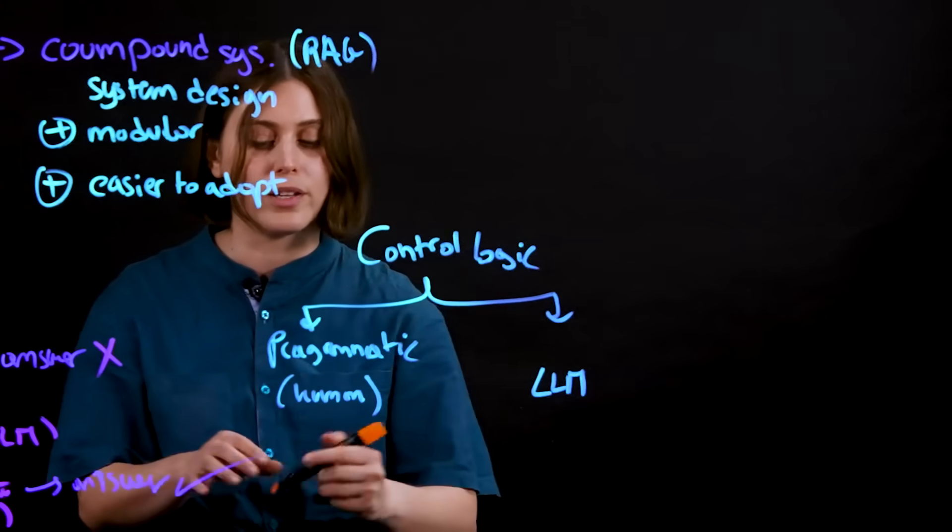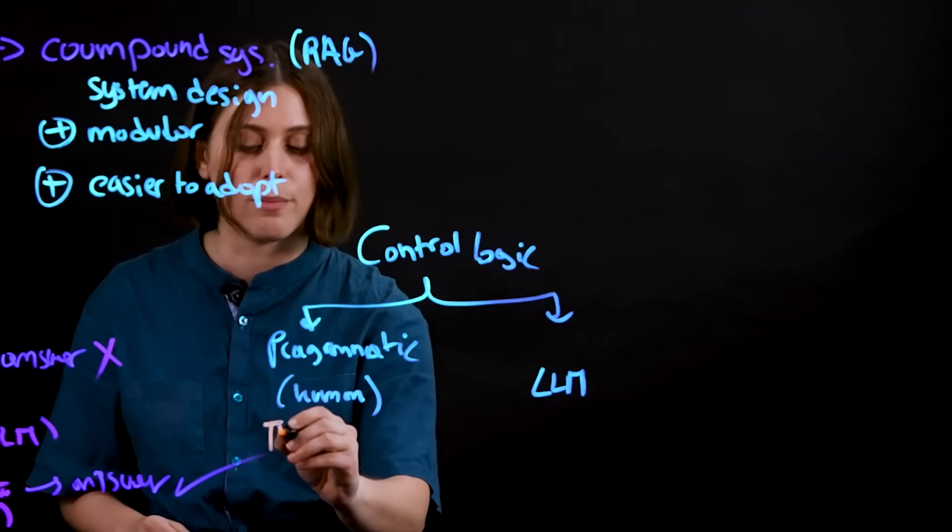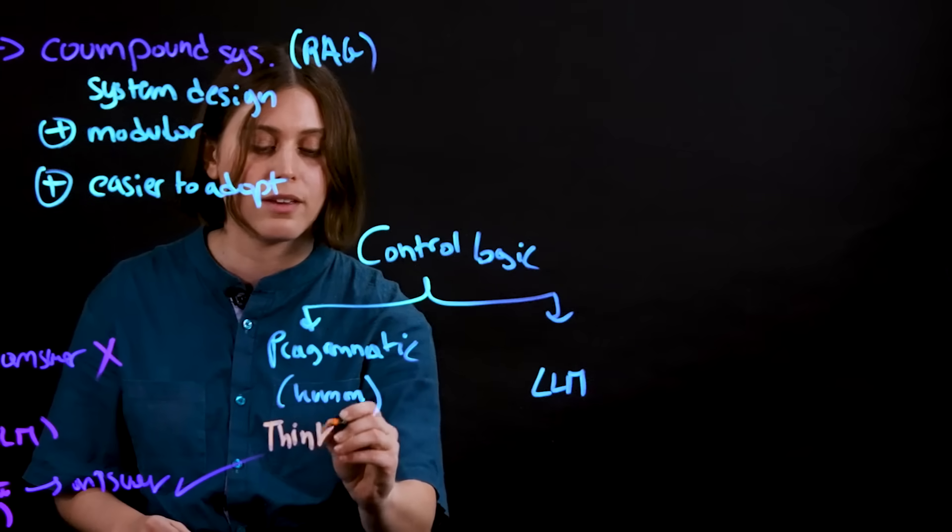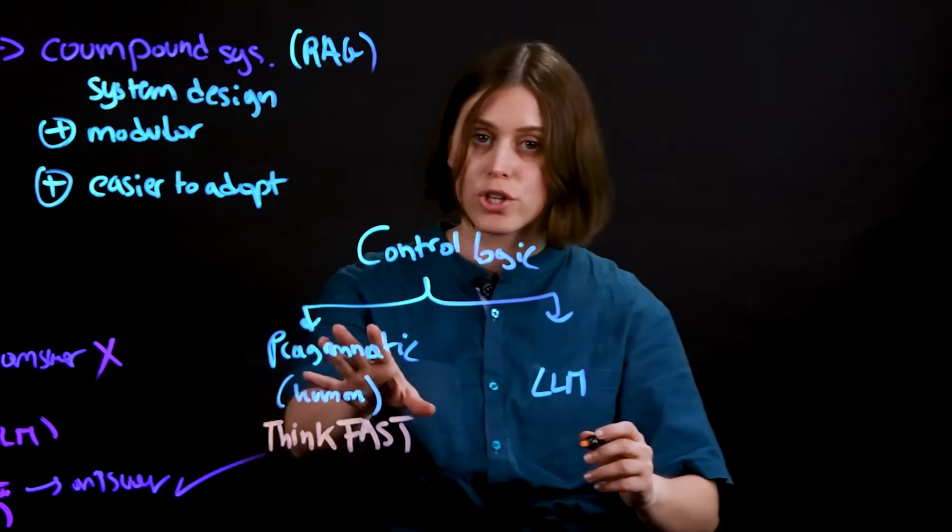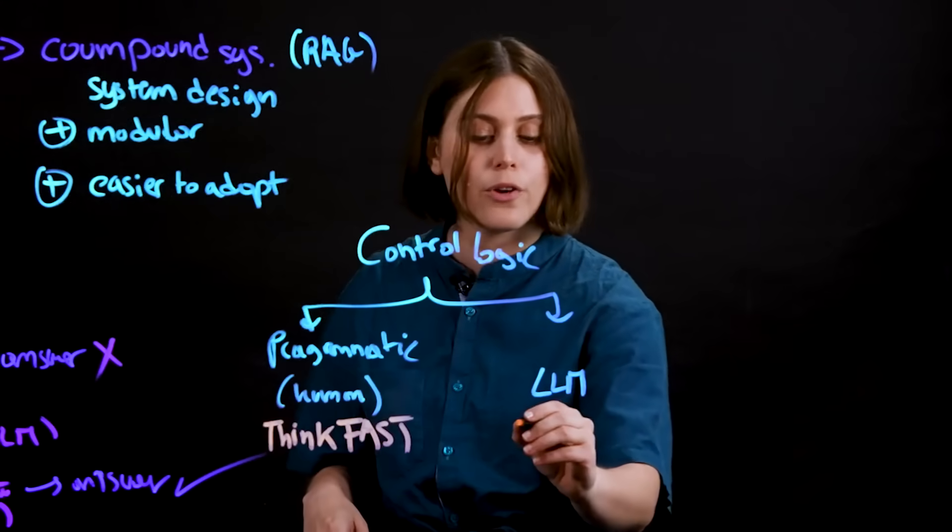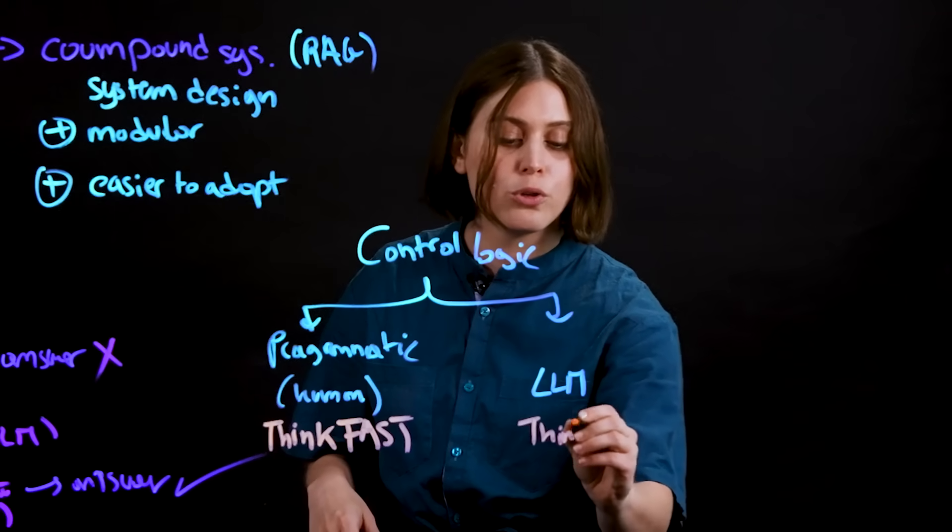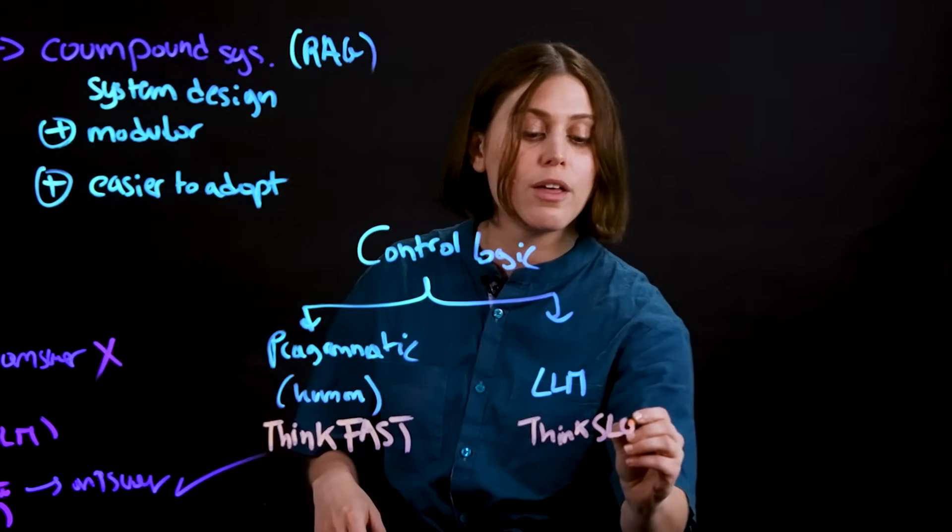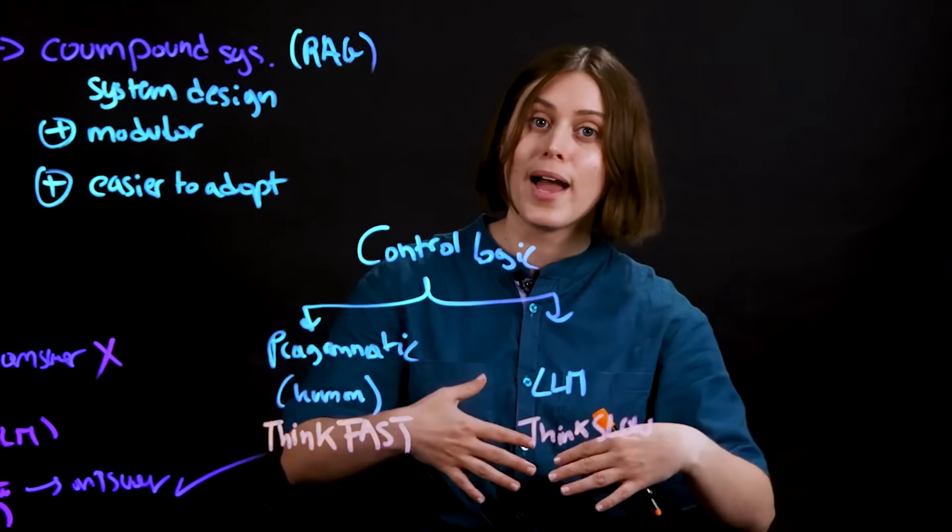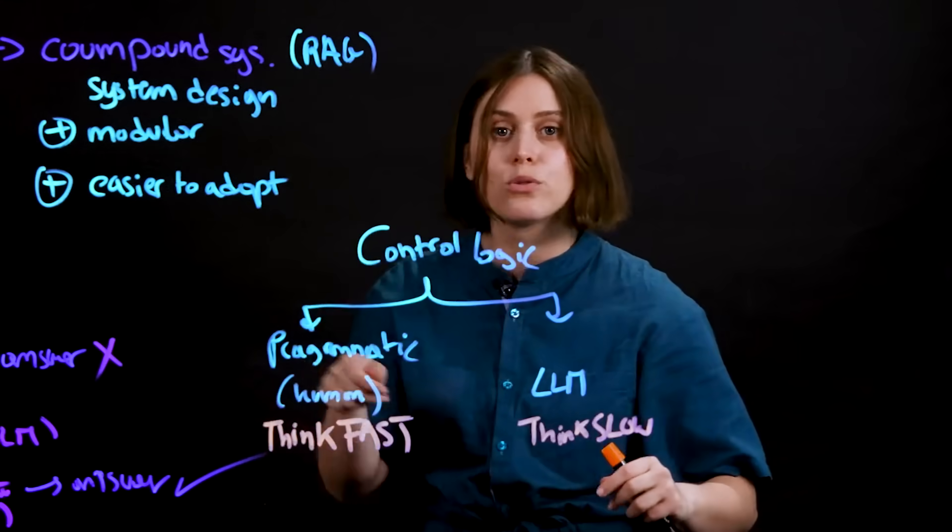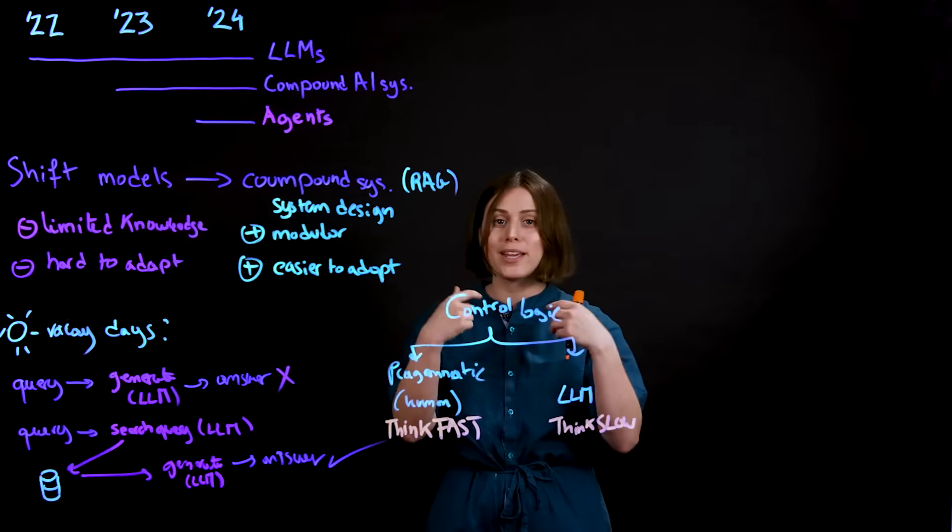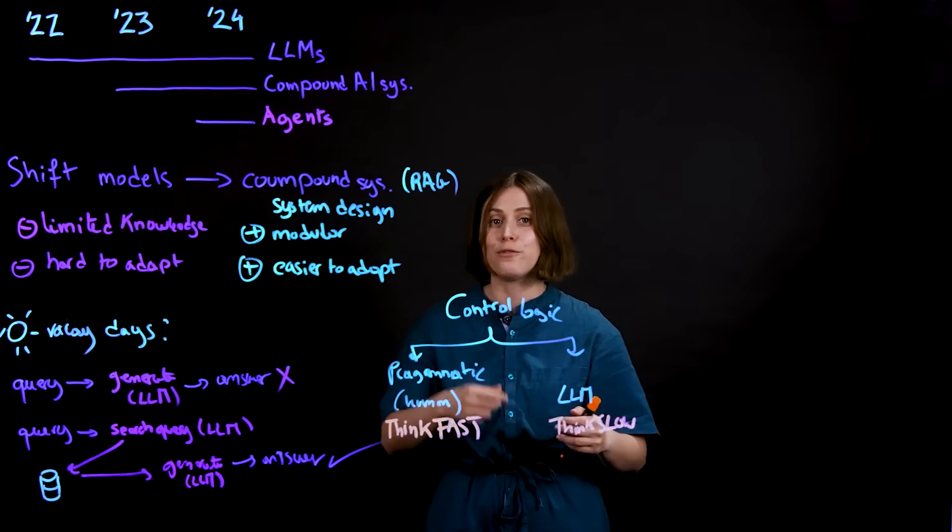Another way to think about it is on one end of the spectrum, I'm telling my system to think fast, act as programmed, don't deviate from the instructions I've given you. And on the other end of the spectrum, you're designing your system to think slow. So create a plan, attack each part of the plan, see where you get stuck, see if you need to readjust the plan.